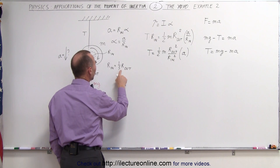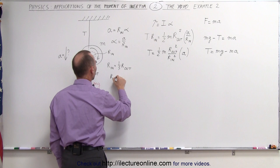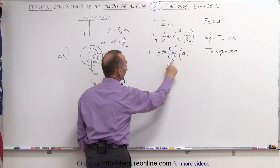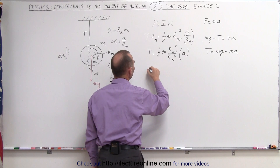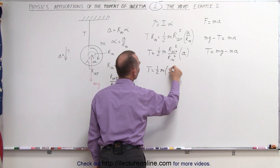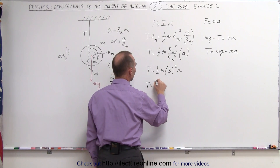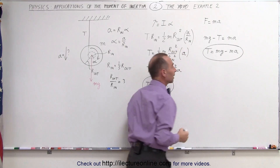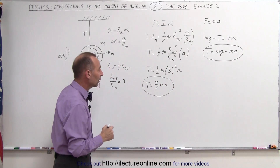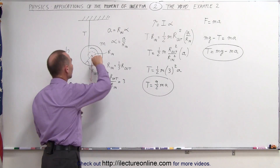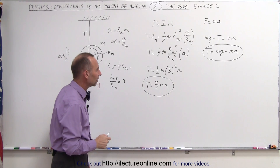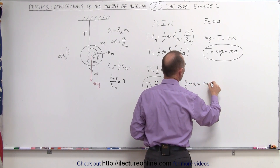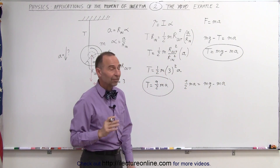Now there's a relationship: r_outer divided by r_inner equals three. When we square that ratio we get nine, so the tension equals one-half times mass times nine times acceleration, or tension equals nine-halves times m times a. Now we have two expressions for tension and we can solve them simultaneously. Setting nine-halves ma equal to mg minus ma, notice every term has an m, so that cancels out.